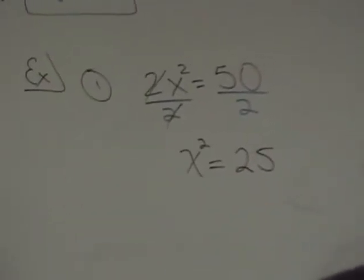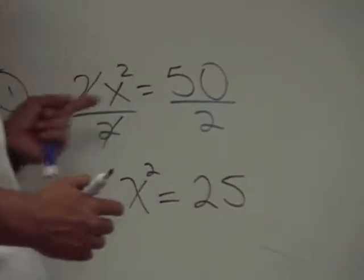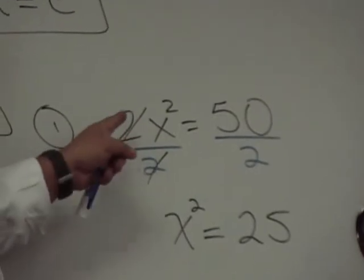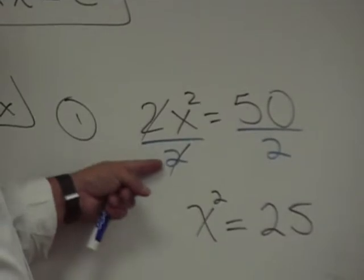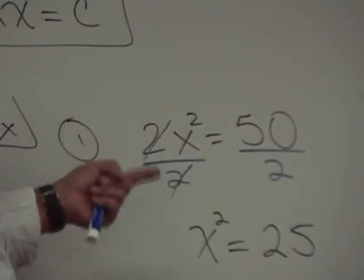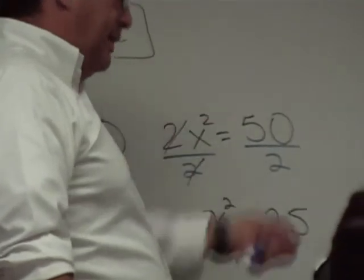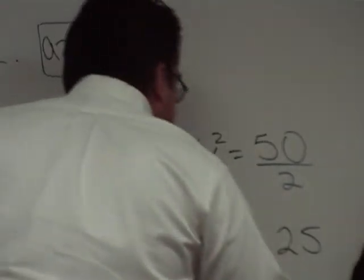So now the way we reason is the following. Just as we cancel this 2 right here using the opposite operation, the 2 is being multiplied by the x squared and the opposite of multiplication is division. I have to think of an operation that is the opposite of squaring a number. Square root. Square root. And the opposite operation is the square root. But there's a catch here that you need to be aware of.